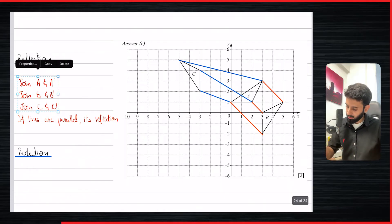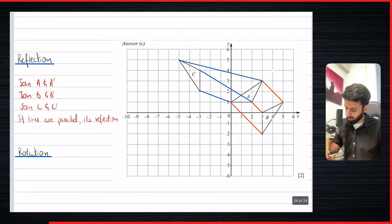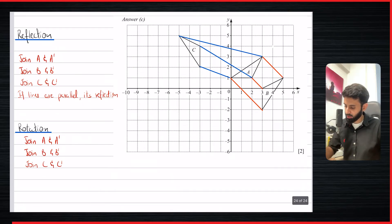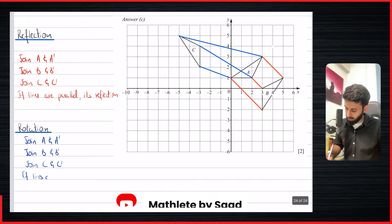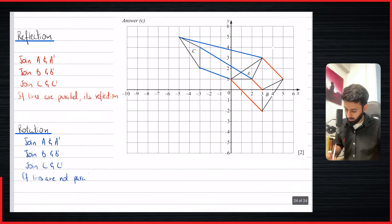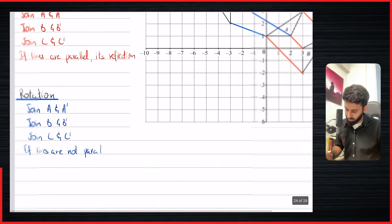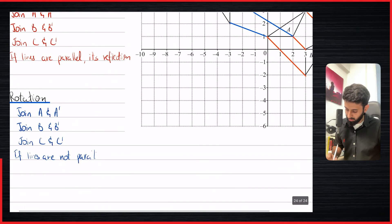So what do we do over here? We did the exact same thing. We joined A and A prime, B and B prime, and C and C prime. So the lines weren't parallel. That means it's a rotation. So let's turn this blue since that's the color that I've used. If lines are not parallel, it's a rotation.